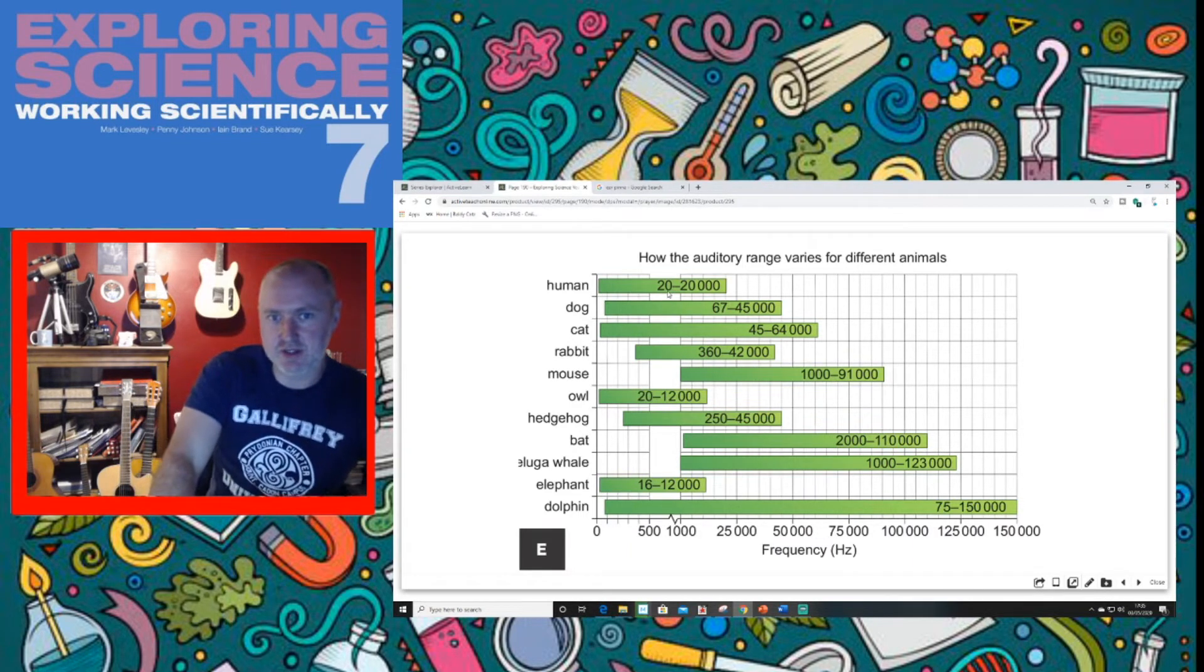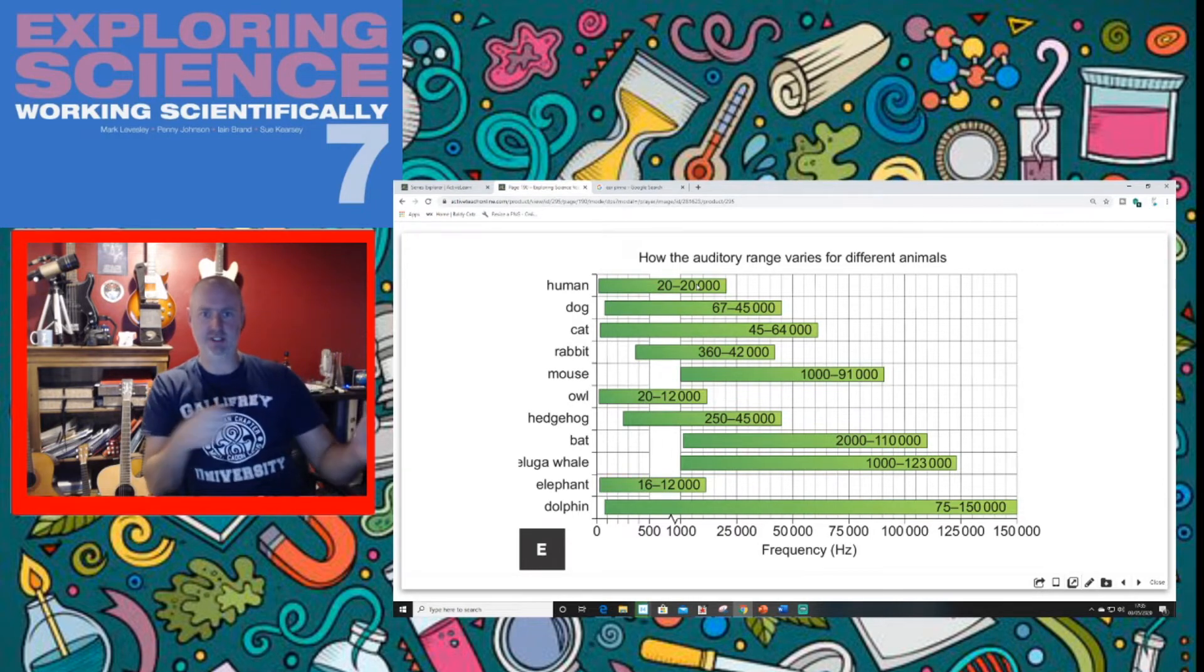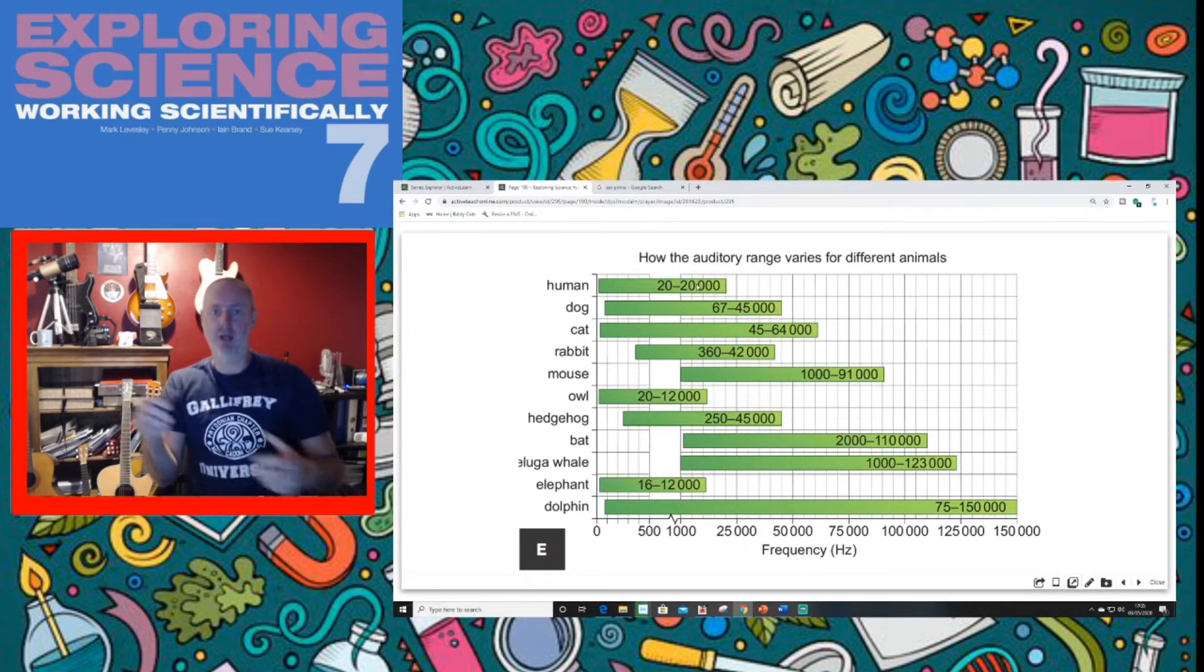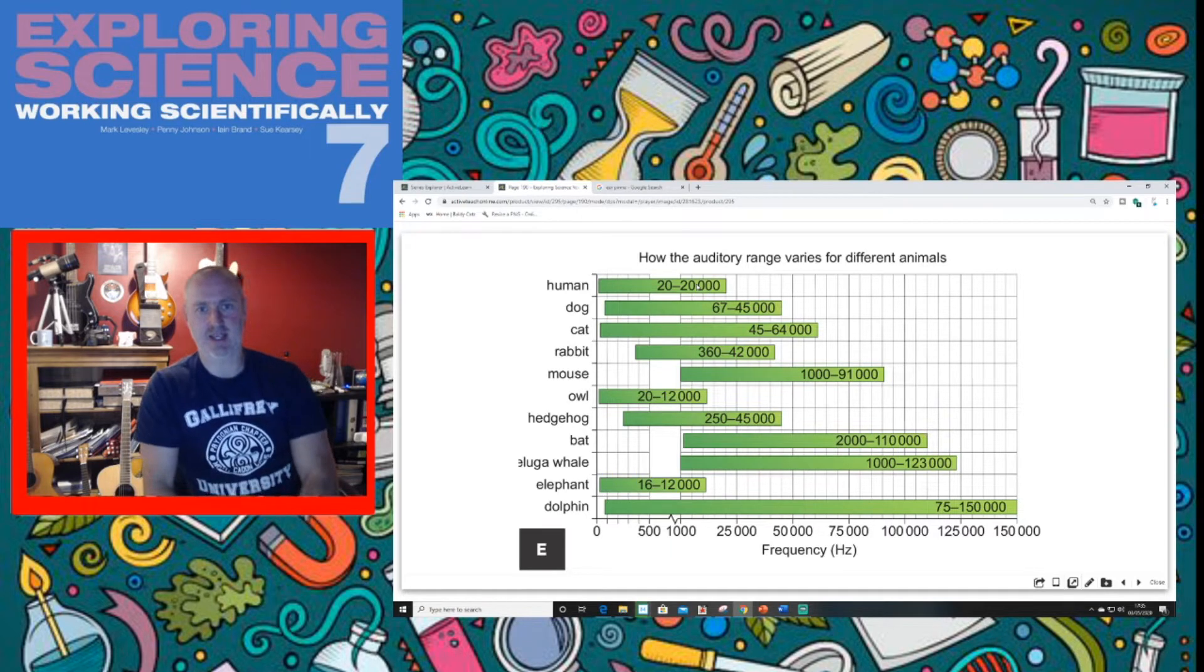Well, if humans are from 20 to 20,000, the size of that range is the difference between those two numbers. We know the lowest is 20 and the highest is 20,000, but how do we work out the difference? We take away 20 from 20,000, which will give us 19,980 hertz.